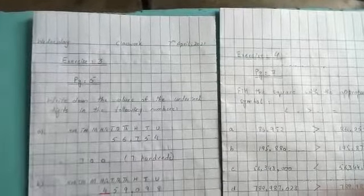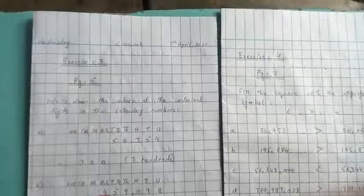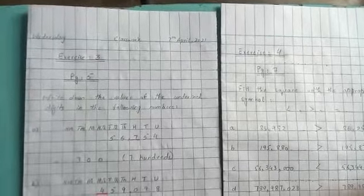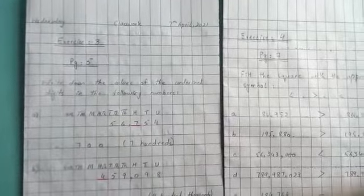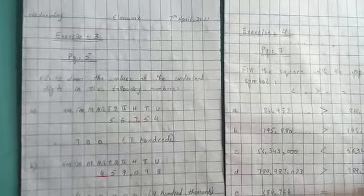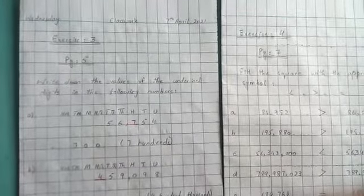Bismillahirrahmanirrahim, Assalamu Alaikum. I hope you all are fine and doing well. Today we will solve Exercise 3 and Exercise 4. Exercise 5 is your homework. In Exercise 3, the question is: write down the value of the underlined digit in the following numbers.